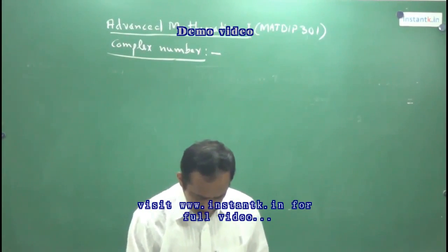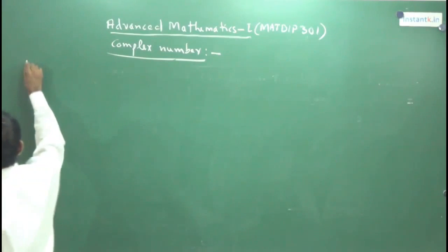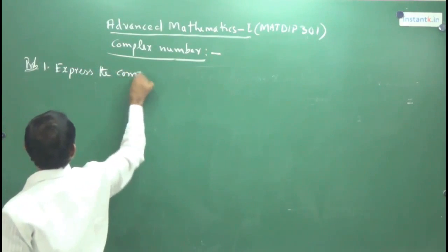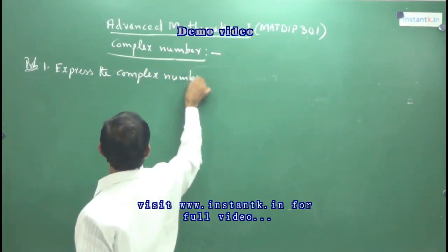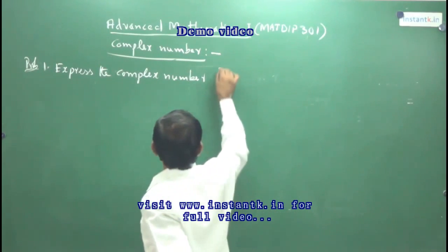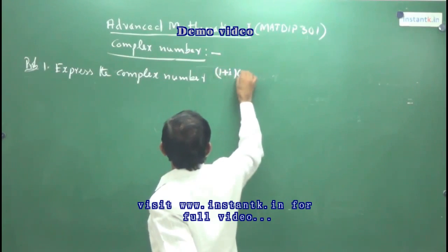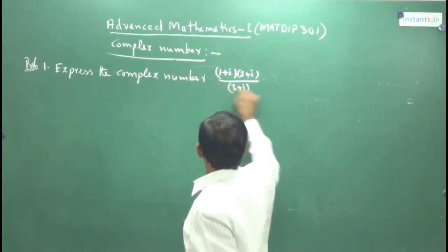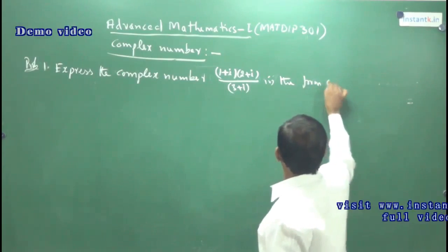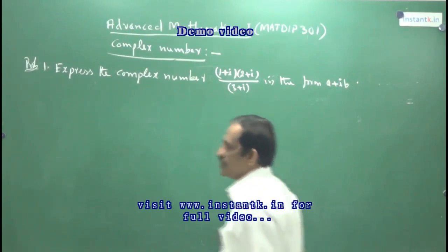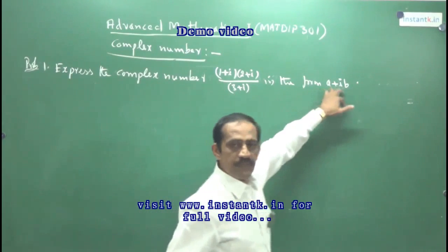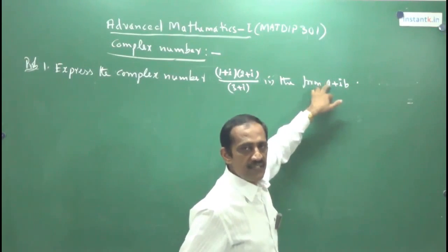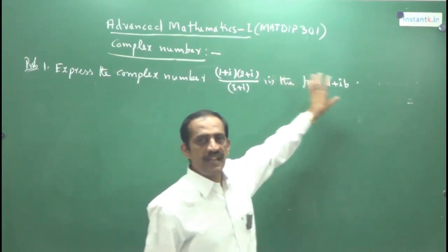Here is a simple example they ask: Express the complex number (1+i)(2+i) divided by (3+i) in the form a+ib. Sometimes instead of x+iy, they write a+ib — where a is the real part and b is the imaginary coefficient. This form is called the standard form of the complex number.